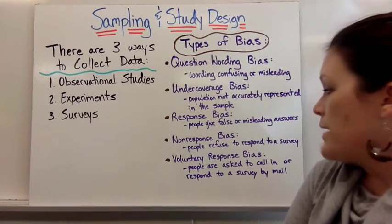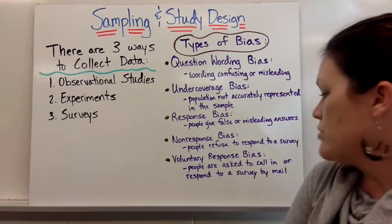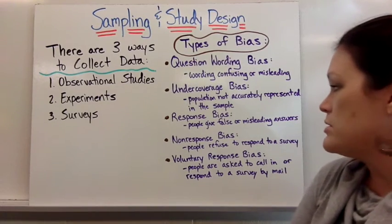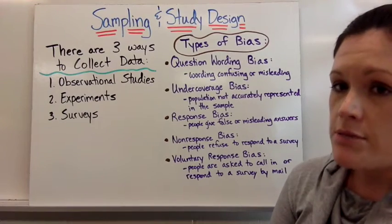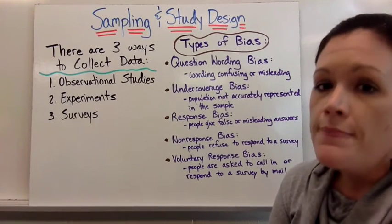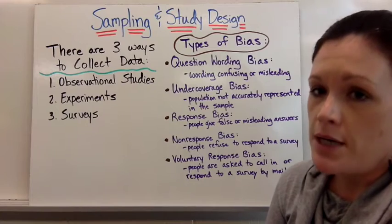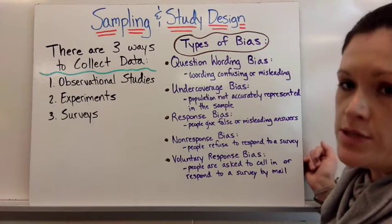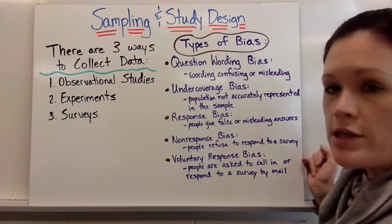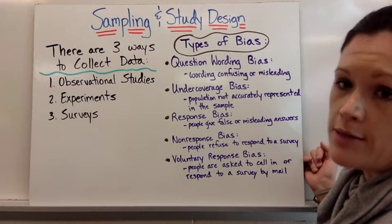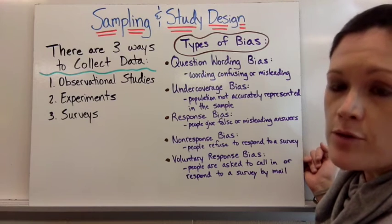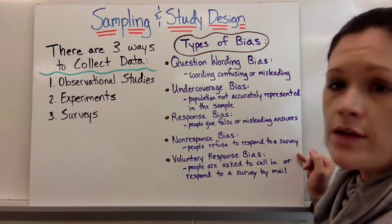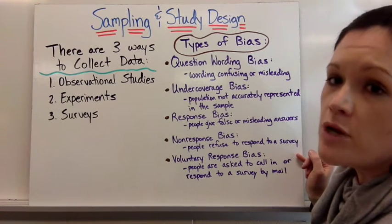Voluntary response bias is when people are asked to call in or respond to a survey by mail. It's similar to non-response bias — if we don't get responses, we can't collect much data. Voluntary response means only people who are more outspoken respond, like callers to a radio station. The only people who call in have a pretty strong opinion about what you're asking about — but of course they're not the only ones with an opinion.